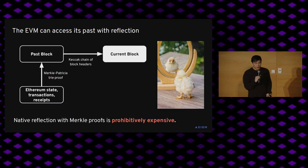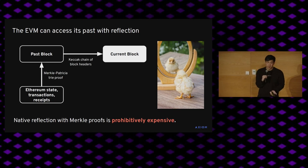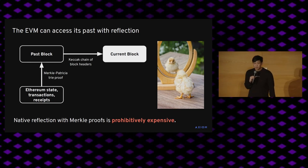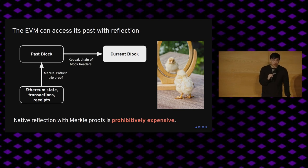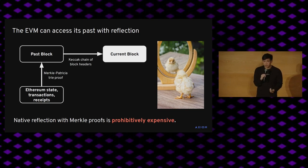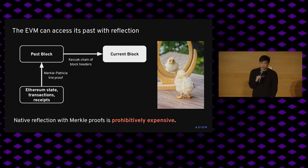This means that we can actually allow blockchains to reflect by accessing this memory. In Ethereum, this would work by first taking the current block, decommitting a pretty long chain of blocks back to a past block containing the information you want to access, and then providing some Merkle-Patricia trie proofs to access a specific piece of information about state, transactions, or receipts. I like to think of this as a baby version of reflection, because it's quite expensive to access each piece of information — if you want to scale this, it's going to be prohibitively expensive.